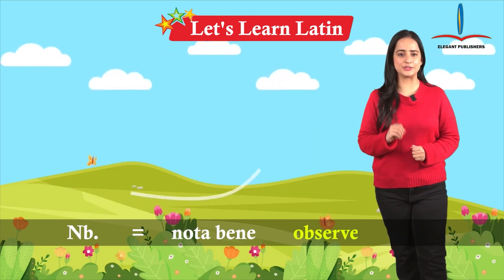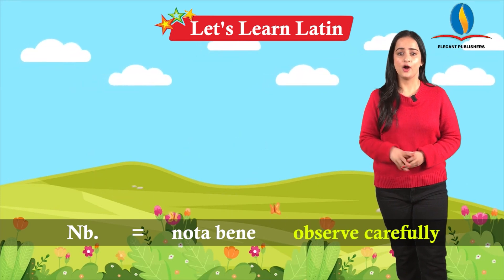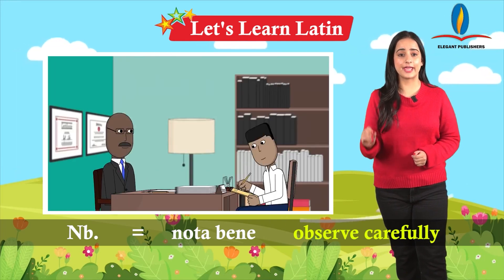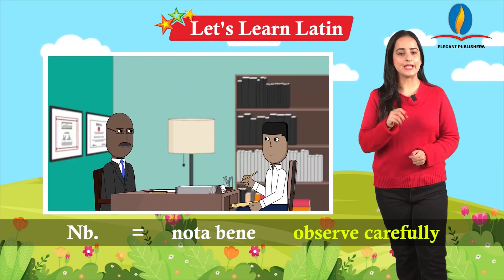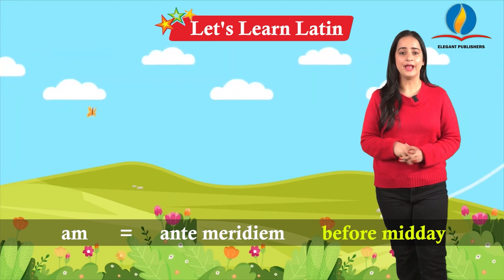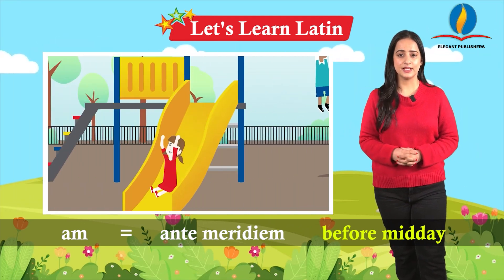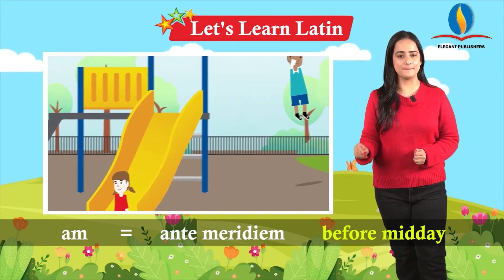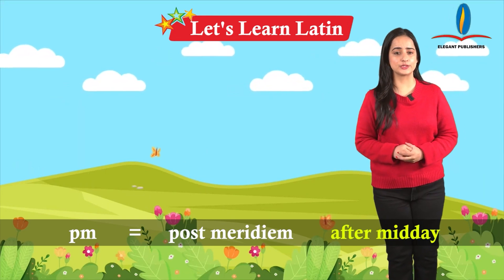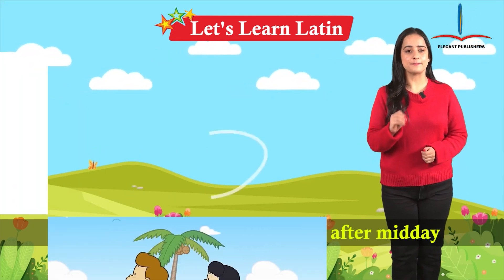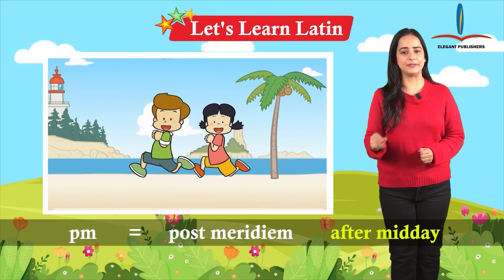N.B. is equal to nota bene, observe carefully. A.M. is equal to ante meridiem, before midday. P.M. is equal to post meridiem, after midday.